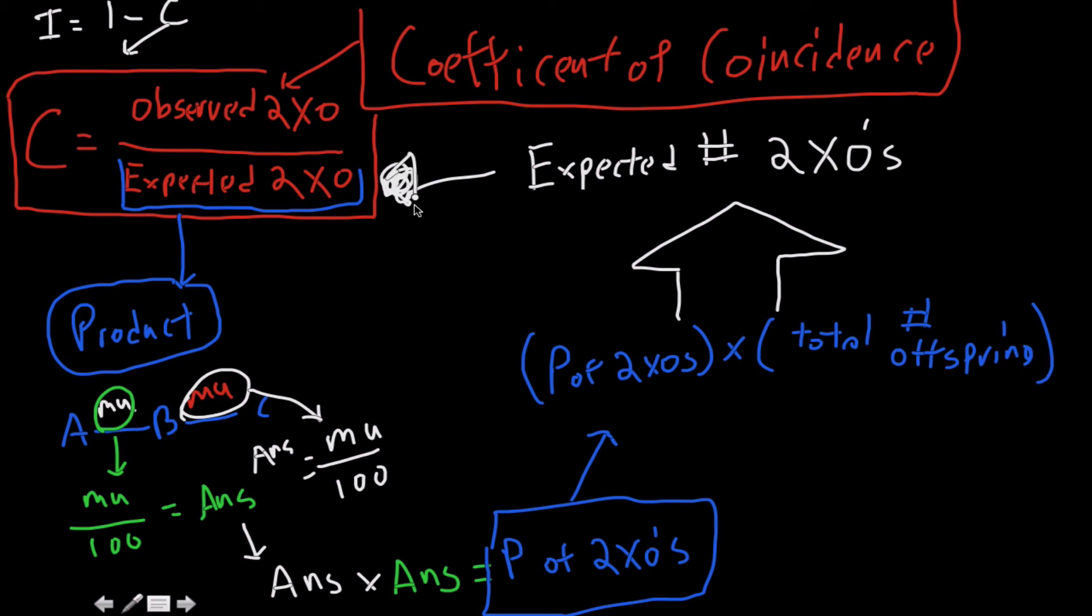A.k.a. what we were looking for at the beginning. That's a big arrow. So, that is your expected likelihood of double crossovers.